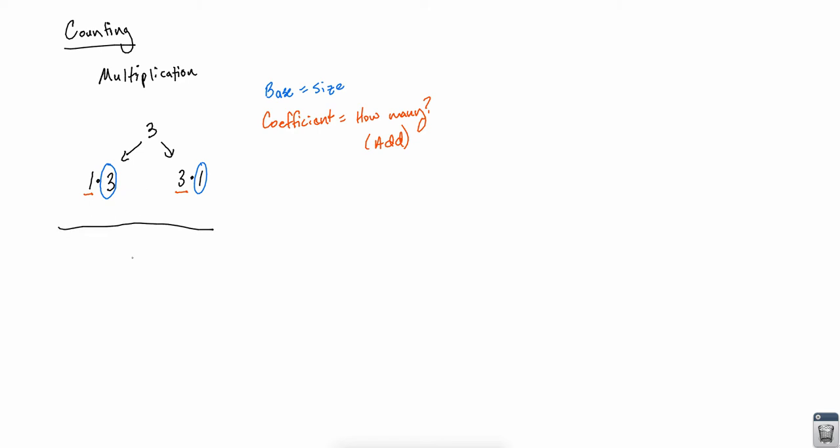Looking at an example, let's say we have 2 times 5. Well, 5 is our base and 2 tells us that we have 2 of those 5's being added together for a total of 10. Now looking at a similar but slightly different example...